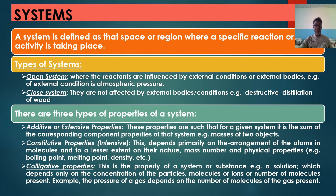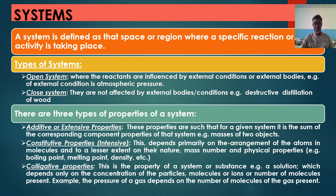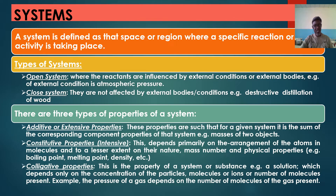There are types of systems. Basically, we're looking at open and closed systems, though there is also an isolated system. Open systems are where the reactions are influenced by external conditions or external bodies, e.g., atmospheric pressure. Whereas in a closed system, they are not affected by external conditions. For instance, if I enter the class, close the door, nobody comes in and nobody leaves, and everything happening around the university is not disturbing us — we can approximate that to a closed system. But if I allow the door open and students can walk in and out, then it's an open system.